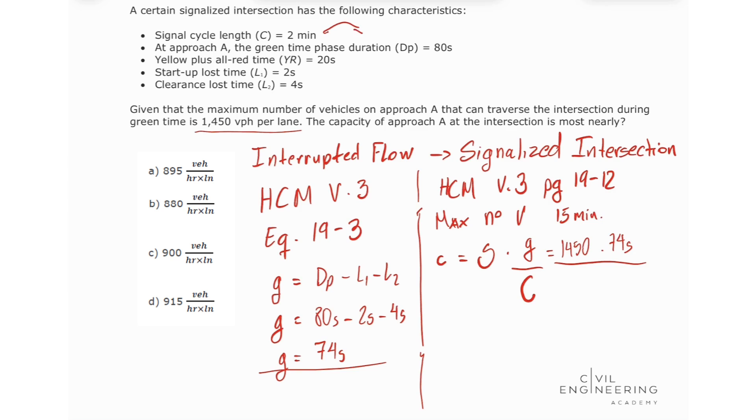Divided by our signal cycle length C, we have that this is 2 minutes, so let's convert this to seconds, we got 120 seconds, 120 seconds. Seconds cancel seconds, and we're going to see that our capacity at approach A at the intersection is going to be 894.16.